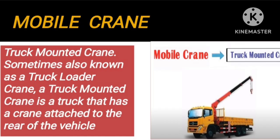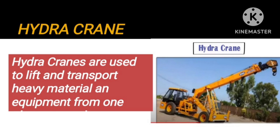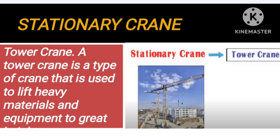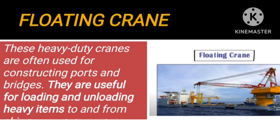Friends, I am giving you examples of mobile crane: truck mounted crane and crawler crane, and third is hydra crane — these are mobile cranes. And examples of stationary crane include tower crane, EOT crane, and floating crane — these are the examples of stationary crane.